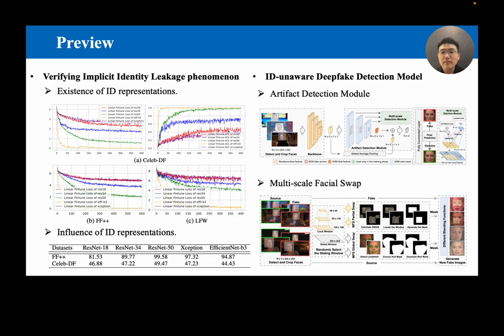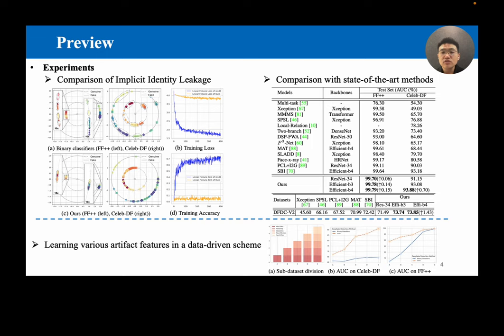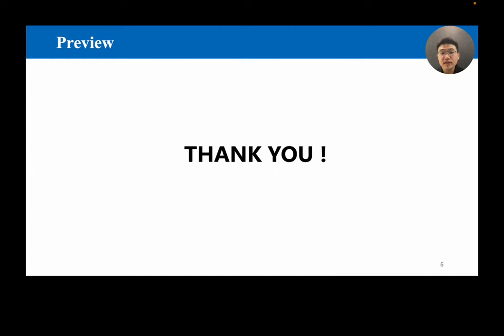To this end, this phenomenon has been verified among various DNNs. Furthermore, we propose a simple yet effective method named the ID-Unaware DeepFake Detection Model to reduce the influence of this phenomenon, along with the multi-scale facial swap to support its training. Results show that our method successfully reduced the influence of such phenomenon and outperformed the state-of-the-art methods. Besides, our method can also automatically learn various yet faithful artifact features in a data-driven manner. Thanks for listening to the preview.